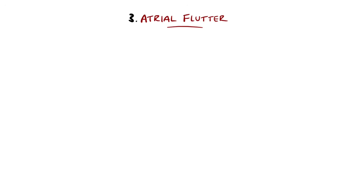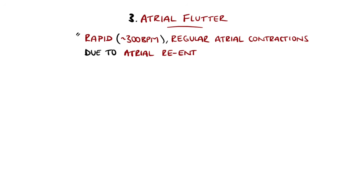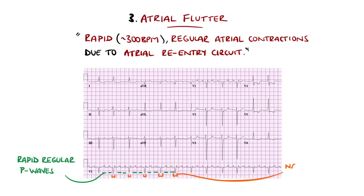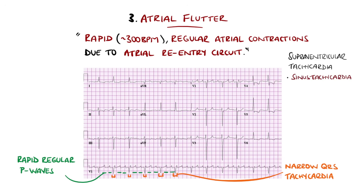Atrial flutter is often mistaken for atrial fibrillation. The main difference is that atrial flutter features coordinated electrical activity in the atria due to a re-entry circuit, leading to rapid contraction of the atria — usually around 300 beats per minute with a regular atrial rate and narrow complex tachycardia. Supraventricular tachycardia is an umbrella term to describe tachyarrhythmias with an origin above the ventricles, classically described as narrow complex tachycardias, including sinus and atrial tachycardia, atrial fibrillation with rapid ventricular response, and atrial flutter, amongst others.